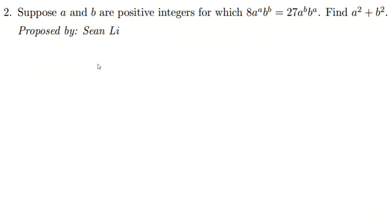Harvard MIT Math Tournament 2021 general round problem number two. Suppose a and b are positive integers for which 8·a^a·b^b equals 27·a^b·b^a. Find a squared plus b squared. If you have any questions about the solution, feel free to send a message.